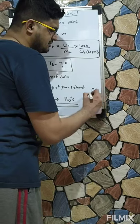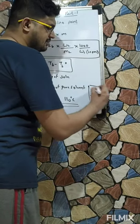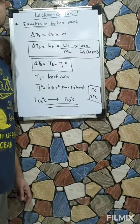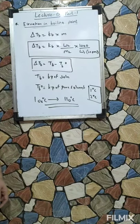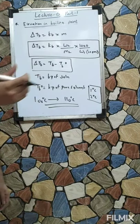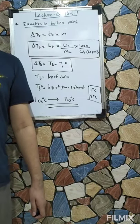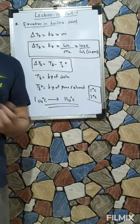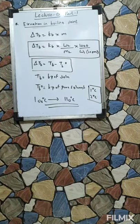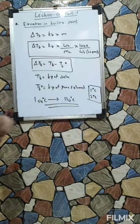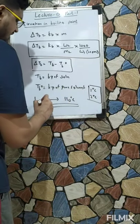Remember one important thing for JEE: when we talk about elevation in boiling point, the temperature does not go directly from 100 degrees Celsius to 110 degrees Celsius. No — this change is very small, maximum 1 to 2 degrees. These colligative properties are only applicable to dilute solutions, as we also said in Henry's law. When you solve numericals, you will see that there is no appreciable increase in temperature — maximum 1 or 2 degrees Celsius.